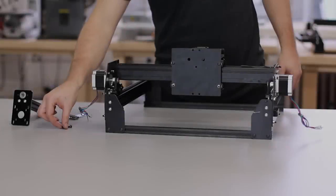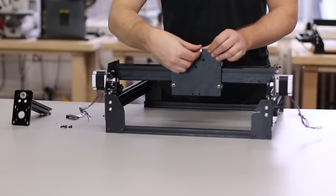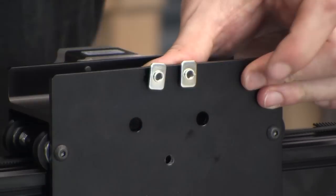Now we're going to attach the Z-axis to the X-carriage. The first thing we'll do is put two small screws through the X-carriage and tighten some insertion nuts on the other side.